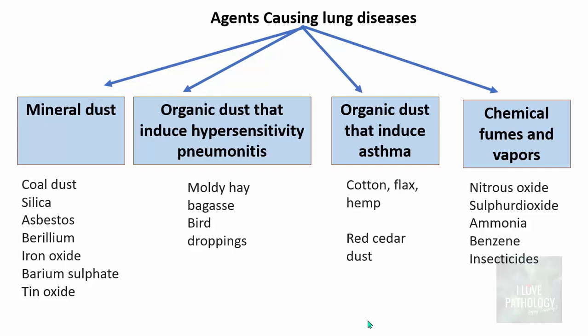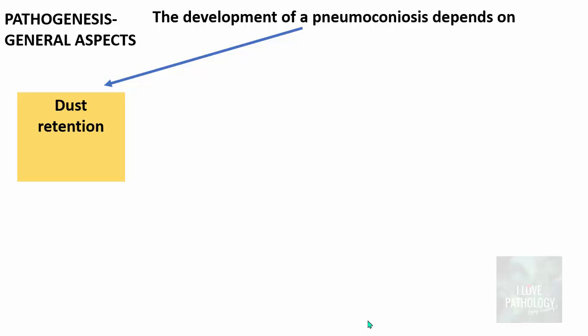These are all the various agents which can result in pneumoconiosis. The development of pneumoconiosis depends on various factors. The number one factor is dust retention, which is the most important factor determining the outcome of pneumoconiosis.